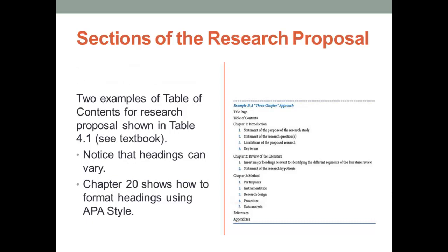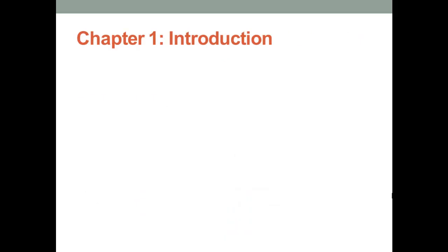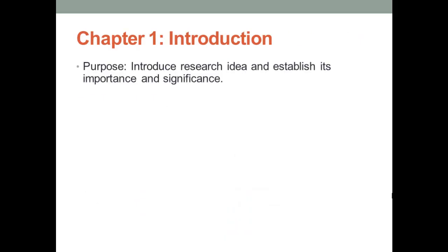Two examples of table of contents for a research proposal are shown in Table 4.1. In this course, we will use the three-chapter approach, in which the literature review is separate from the introduction. The first chapter of your proposal is titled Introduction. The purpose of this section is to introduce your research idea, establish its importance — that is, you want to sell it to your reader — and explain its significance.